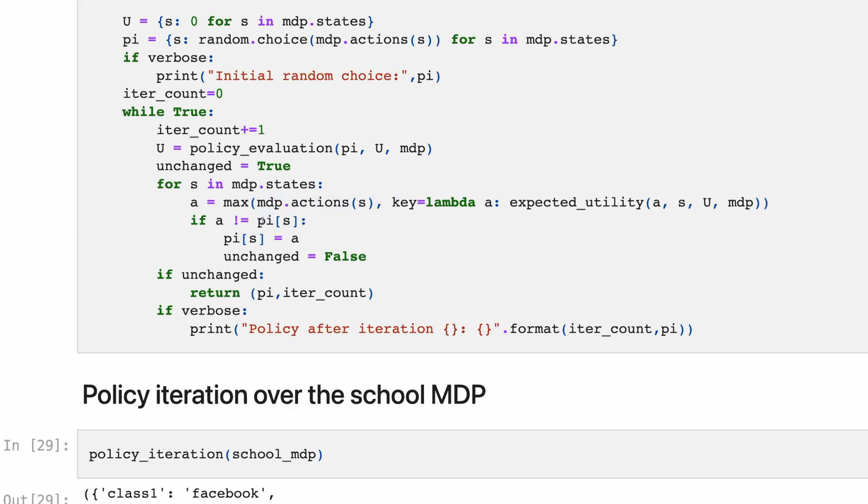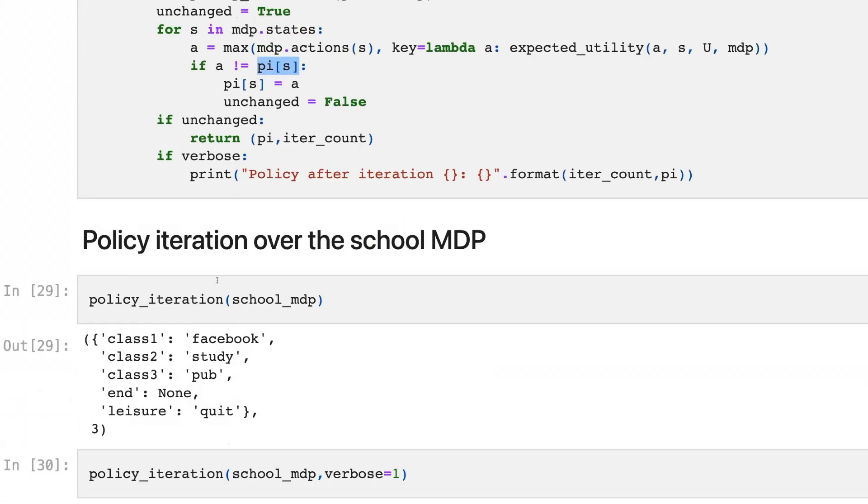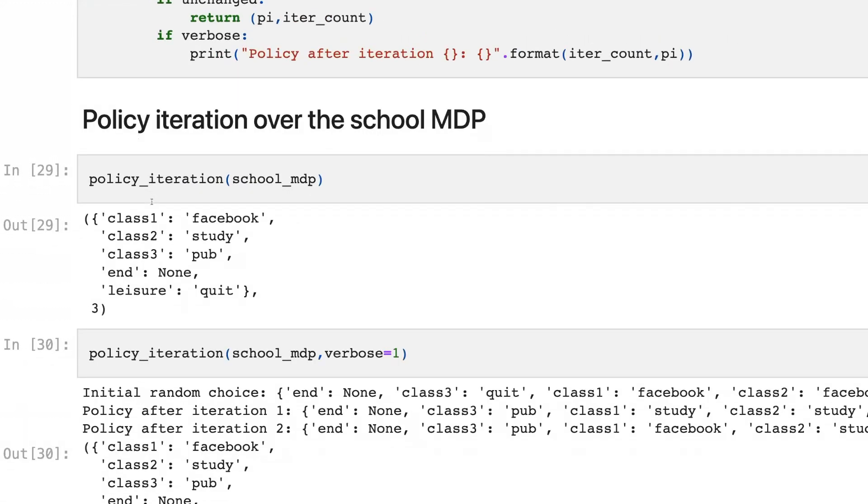Again, policy is the function where you give a state and receive actions. So it's a set of best actions. And here we update the policy. And here we implement this algorithm.